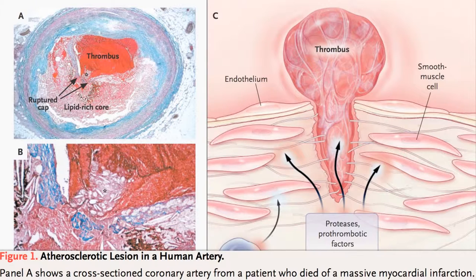Blood rushes into the hole and says, "Hey, we know how to plug holes," and forms a blood clot, also known as a thrombus, that can close off the whole rest of the artery. And then we have the opportunity to visualize a cross-section like this of an artery on autopsy — because you're dead.